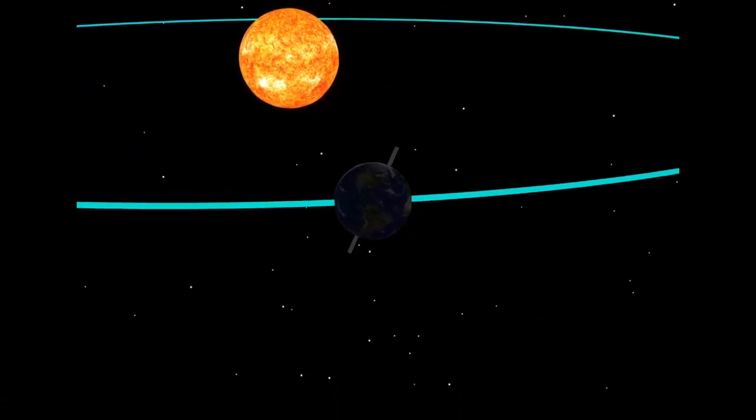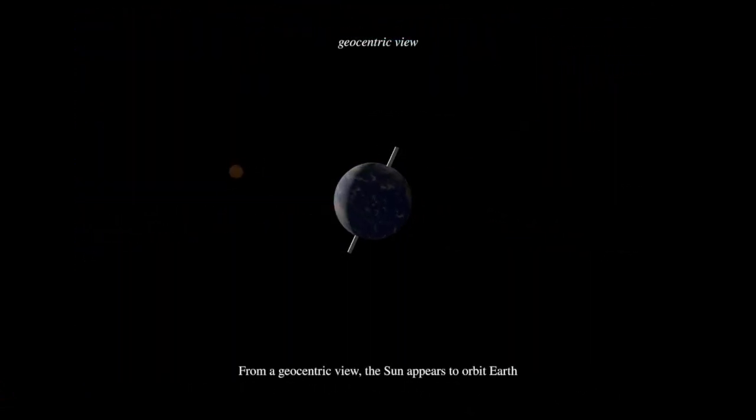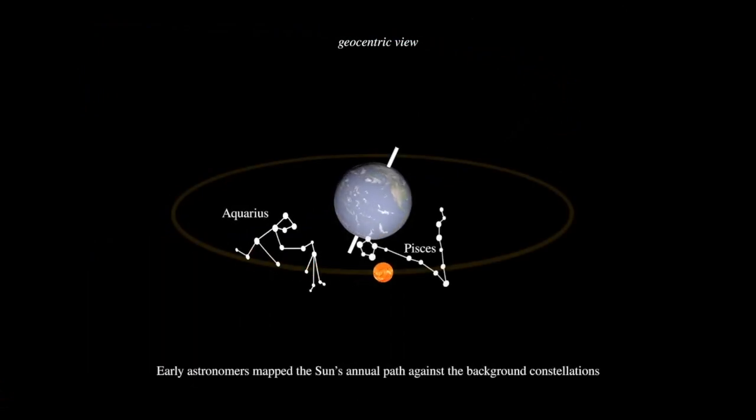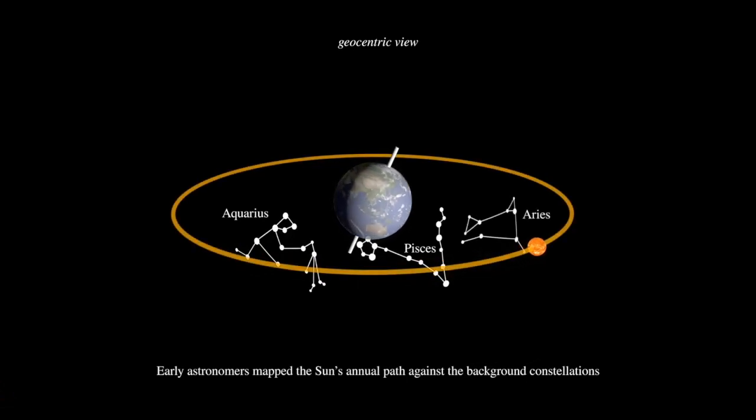From our perspective, the ecliptic runs through 13 constellations, which were named by the ancient Greeks, 12 of which are the modern-day astrological zodiac signs.